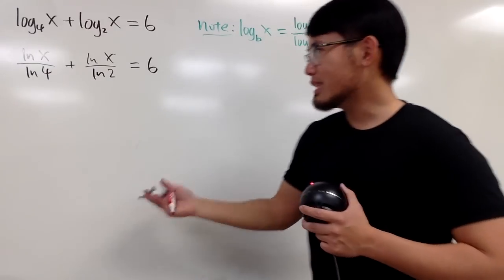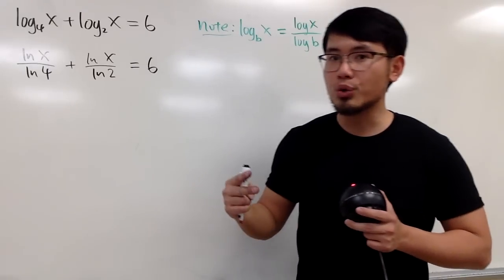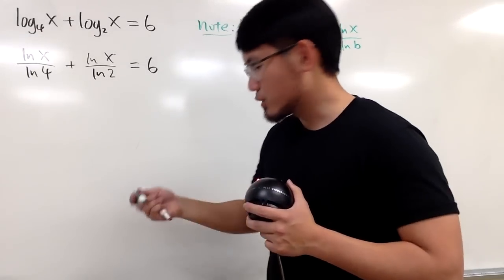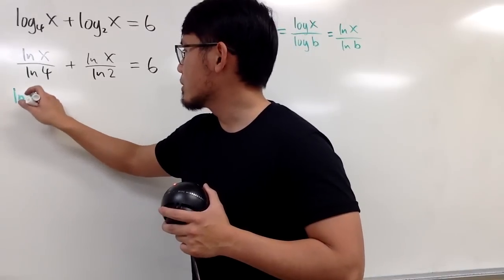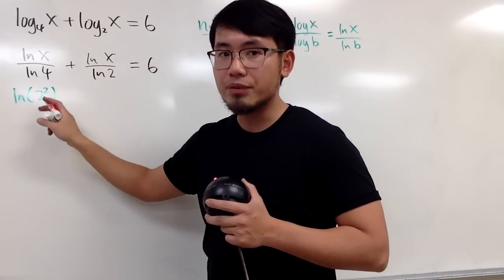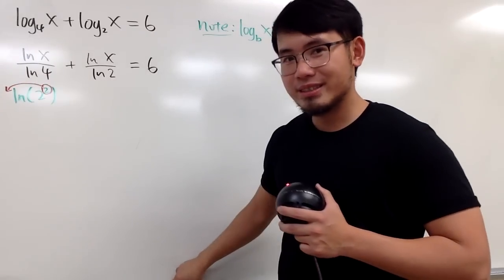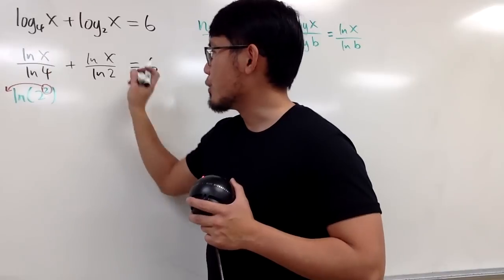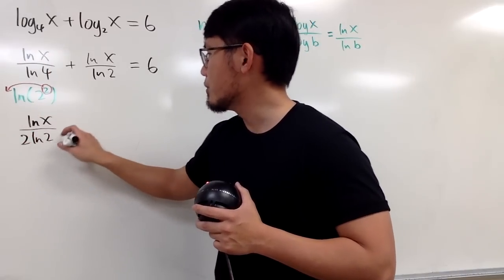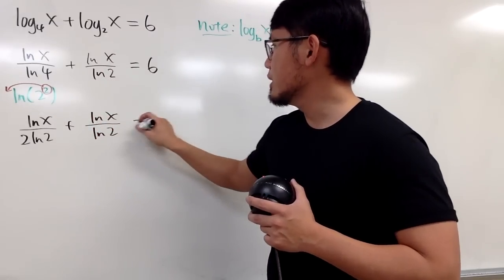Good. So, that's pretty much the first step. And now, look at 4 right here. 4 is the same as 2 squared. Why do we need that? Because, let's just put this down in green, natural log of 2 squared, because when we have 2 squared, we get to bring the power 2 to the front for that. So, this equation becomes natural log of x over 2 natural log of 2, plus natural log of x over natural log of 2, equals 6.